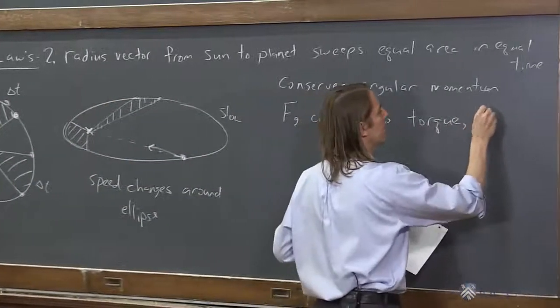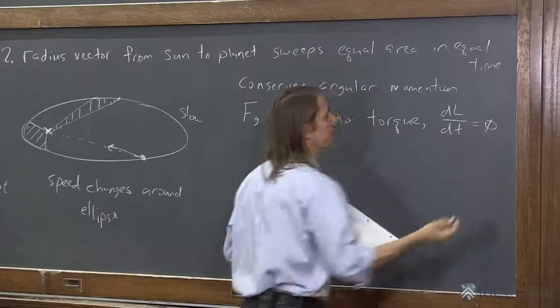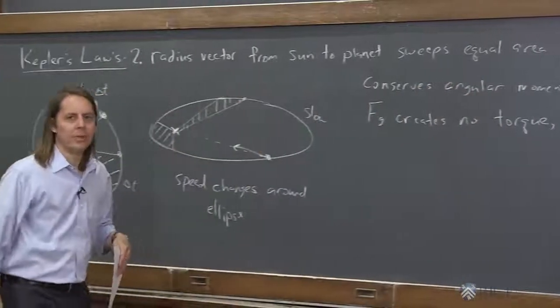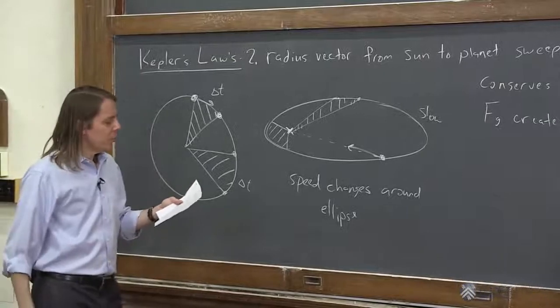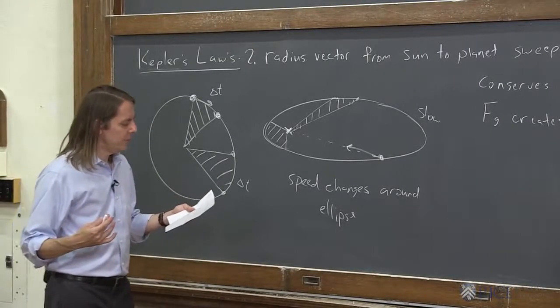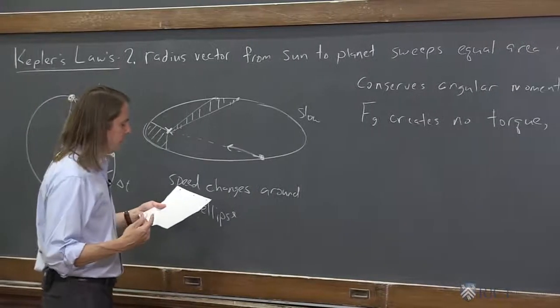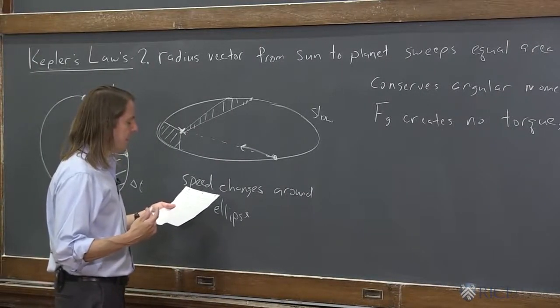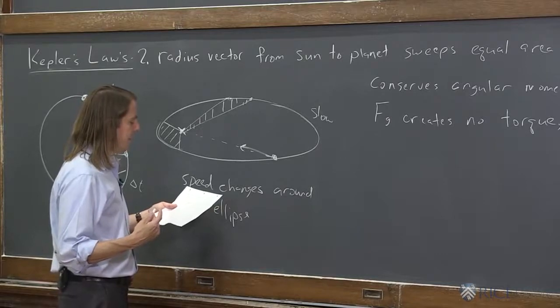So there's no cross product, so there's no torque. So Fg creates no torque, so dL dt is zero, therefore the angular momentum has to be constant. Okay, so if it's already moving then, let's figure out what it is. So L is constant.